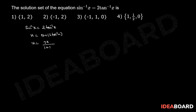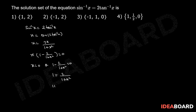This implies x equals to 2x by 1 plus x squared, which implies x times (1 minus 2 by 1 plus x squared) equals to 0. So x equals to 0, or 1 minus 2 by 1 plus x squared equals 0, giving 1 plus x squared equals to 2, therefore x squared equals to 1.